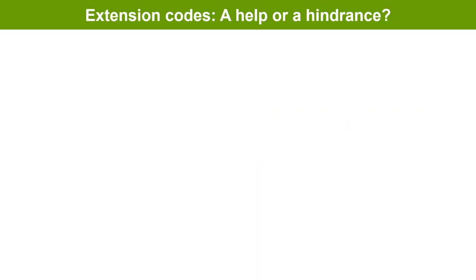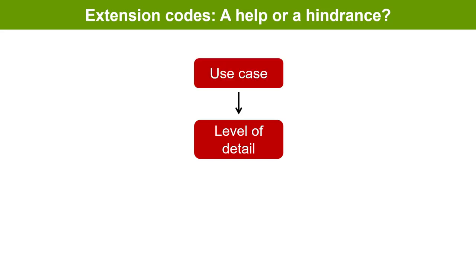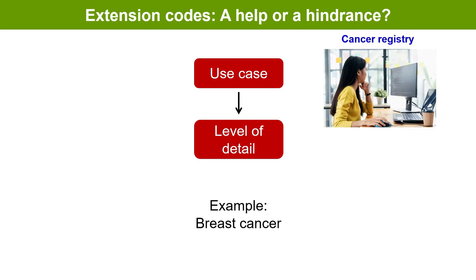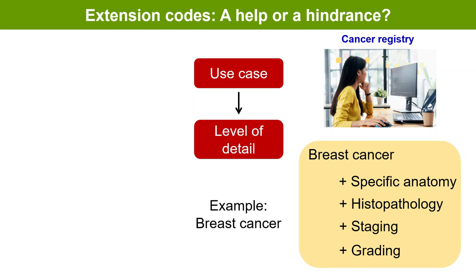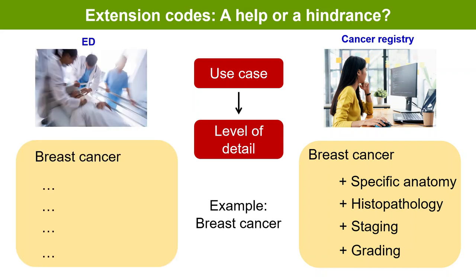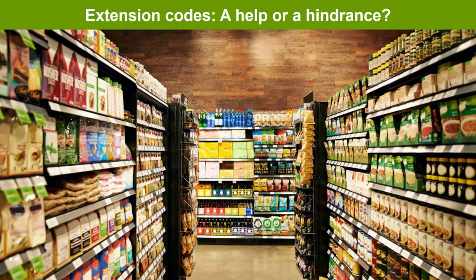Are extension codes a help or a hindrance? As a rule, the level of detail in clinical documentation is always based on the data use case or health system documentation guidelines or requirements. For example, for a case of breast cancer, a cancer registry would include histopathology, staging, grading, and so on. But an emergency department doctor would neither have the time nor be interested in this level of detail when documenting her diagnosis. So extension codes are mostly optional — it's like walking into a supermarket and finding all sorts of goods. The fact that I don't eat spicy food doesn't mean the supermarket should not have them on their shelves for other customers to pick if they so choose.